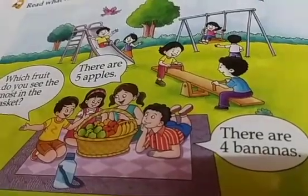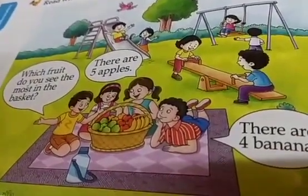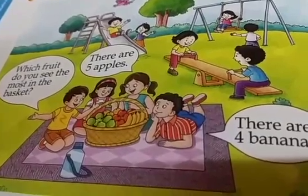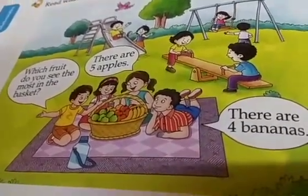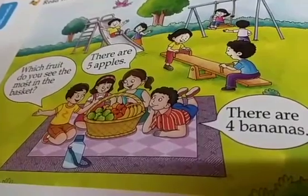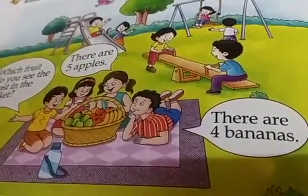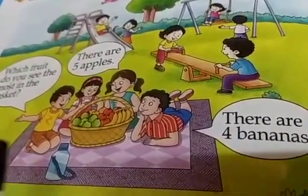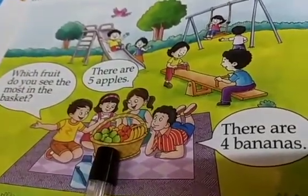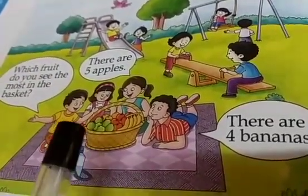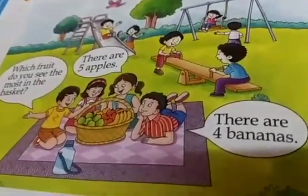Now you hear, you can see the picture — Anishai is at her picnic. Which fruit do you see the most in the basket? There are 5 apples, and there are 4 bananas. You can also see more fruits are here. However, it is very difficult to find out which fruits have how many numbers.